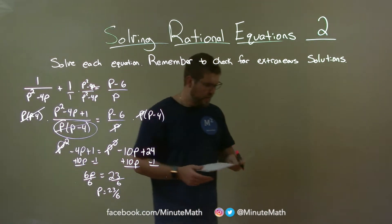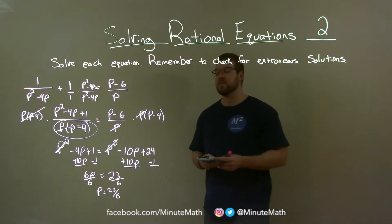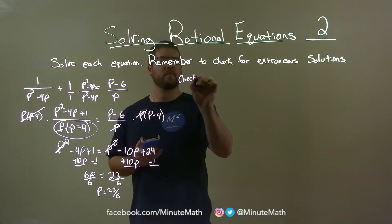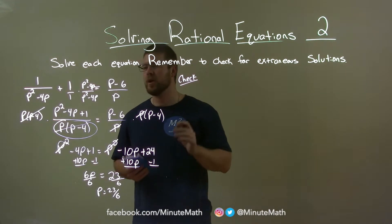So now they tell us that we need to check that for extraneous solution. So let's go check this. Check for extraneous solution. So we're going to plug 23 over 6 in for all of our p values.